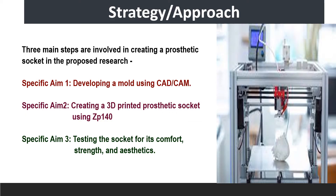Next, we have strategy and approach. The proposed strategy to use 3D printing for manufacturing prosthetic sockets for lower limbs using a free-form fabrication mold involves three key steps: first, developing a mold using CAD or CAM; second, creating a 3D printed prosthetic socket using ZP-140; and third, testing the socket for its comfort, strength, and aesthetics.